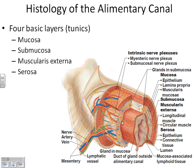Outside of the mucosa, the next layer is the submucosa. What are all those red, blue, green, and yellow things in there? Nerves, veins, arteries, lymphatic vessels. In the submucosa is where you have all of your interactions with your cardiovascular system, your lymphatic system, and your nervous system. Blood vessels are needed for absorption to occur and to keep the tissue alive by supplying oxygen. Nerves are needed so you can feel — you need to know when your stomach hurts.